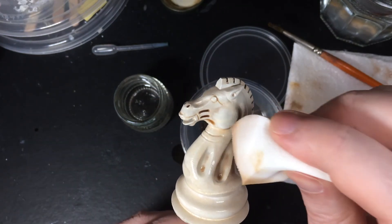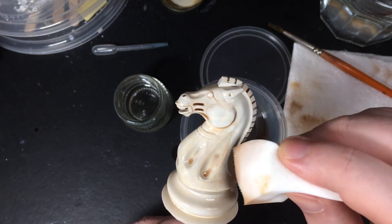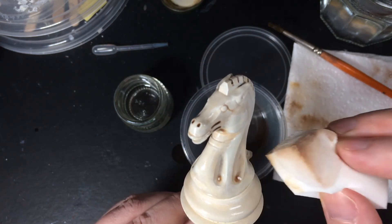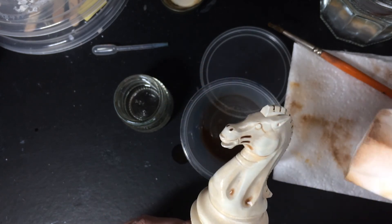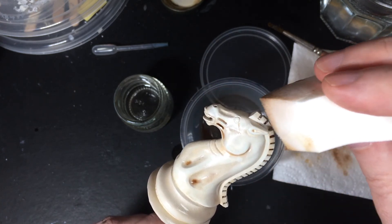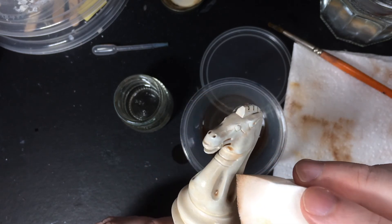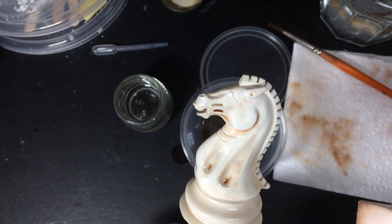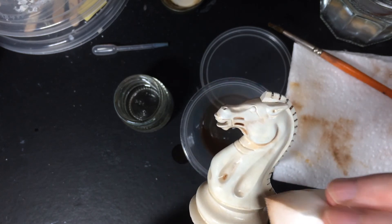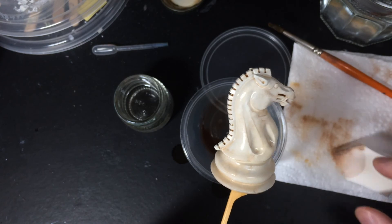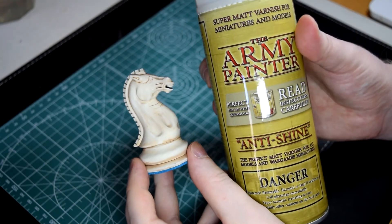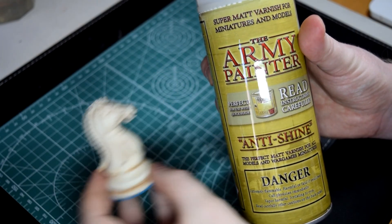And then as before, take the makeup sponge and remove the wash from the raised areas. The wash is pooling and creating parts that are too dark, just remove some of it. Now leave it for at least one day to dry and then spray it with varnish. I've used Army Painter's Anti Shine Matte Varnish. This gives a nice bone finish.